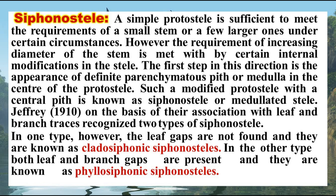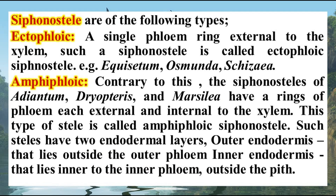A simple protostele is insufficient to meet the requirements of larger plants. Hence, as plants started becoming larger, bigger, and taller, siphonostele evolved. There are two types of siphonosteels based on leaf gaps: cladosiphonostele and phyllosiphonostele. Siphonostele is also classified into ectofloic siphonostele, where phloem is found only on the outside of xylem, and amphifloic siphonostele, where there is a ring of phloem both inside and outside the xylem ring, giving two rings of phloem with one ring of xylem in the middle.